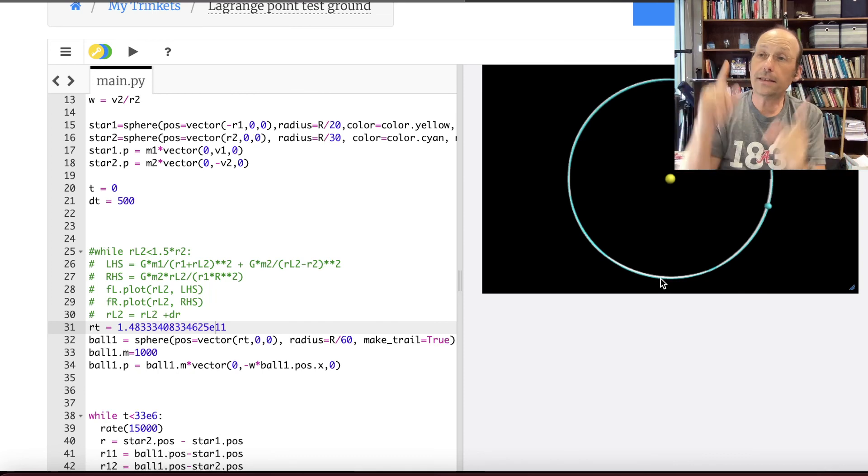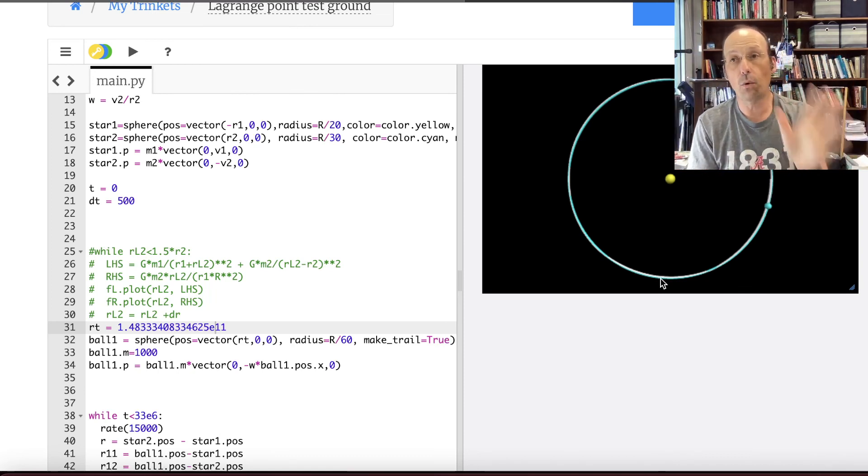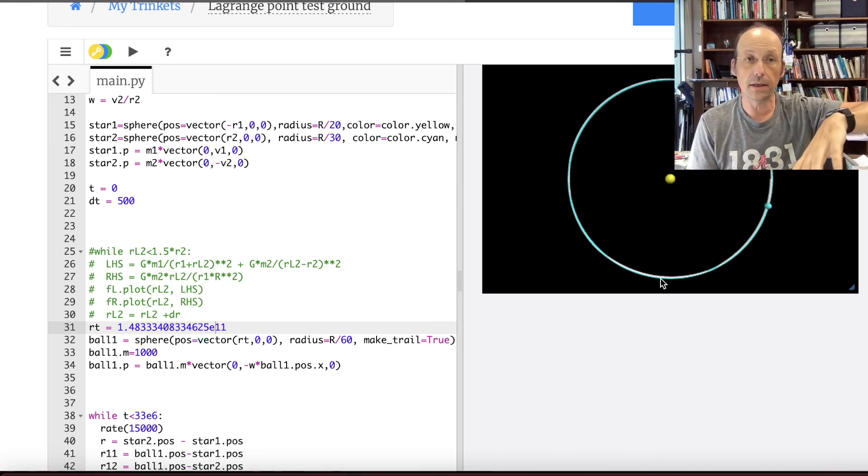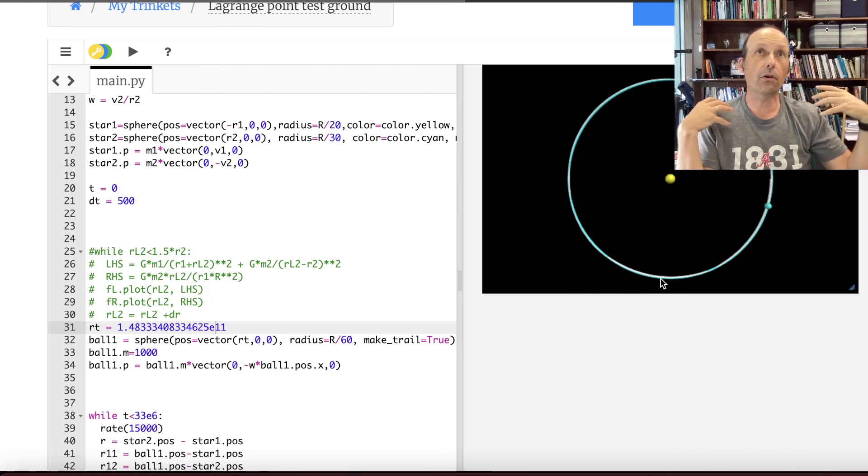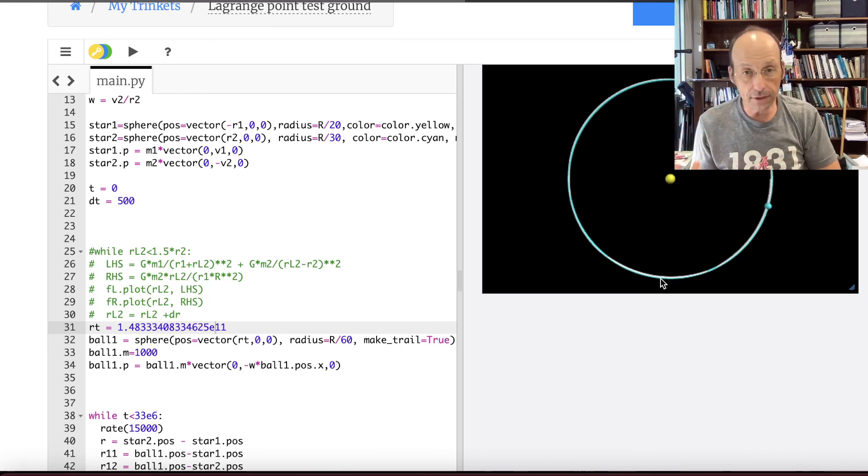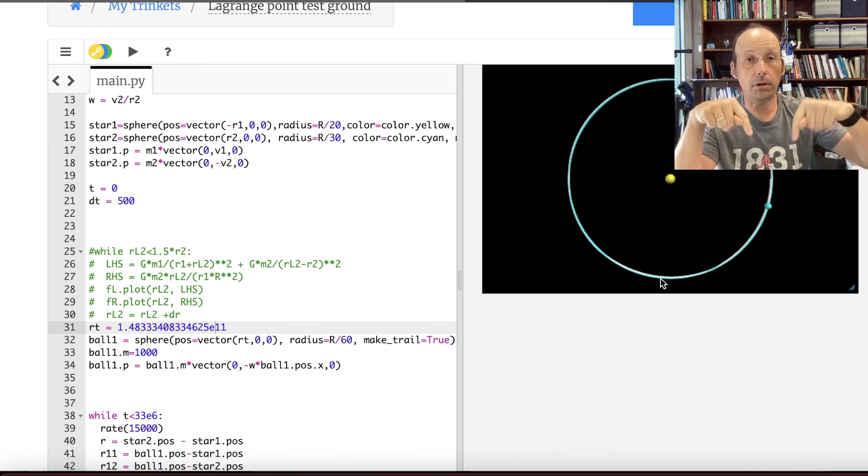Okay, so I still have to find L3, which is on the other side of the planet, and then L4 and L5. And I'm going to find those, and I'm going to model stability of these. I don't know how far I'm going to get. I want to do a whole bunch of other stuff here, but I have to get ready for the fall semester at the same time. So I'll include the link to both of these codes down below.